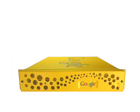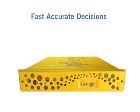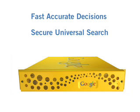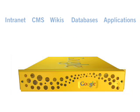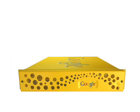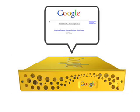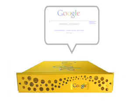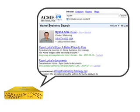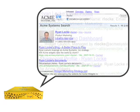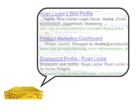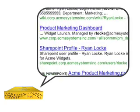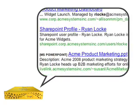The Google Search Appliance helps workers make fast, accurate decisions by providing secure, universal search across your organization's information. The Search Appliance breaks down the silos of information and lets workers find internal information as easily as they find information on the web. The Google Search Appliance produces a set of unified search results that use both our core Google.com search algorithms as well as algorithms designed for how information is stored within organizations.